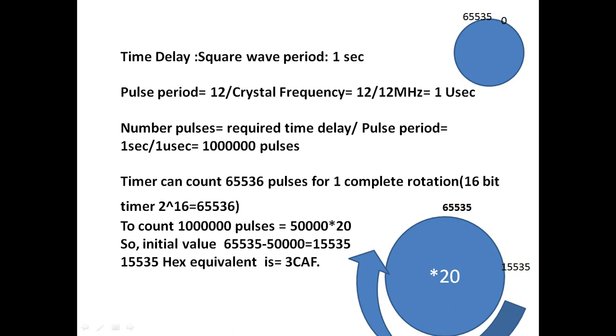But to count these 50,000 pulses, you cannot start with 0. Timer can stop at only by reaching maximum value. You cannot, you don't have any chance to stop your timer at any middle point. If you start with 0, there is no chance to stop at 50,000. So that you have to find out initial value. Initial value, what I am doing? I am subtracting this 50,000 from maximum value, 65,535. So I will start from 15,535. If you start from 15,535 and you count up to 65,535, you counted 50,000 pulses. This process, I will repeat 20 times.